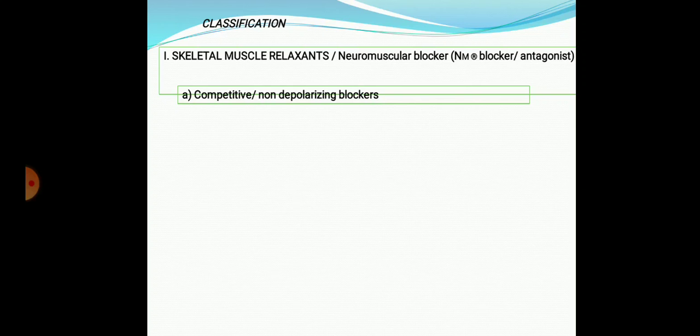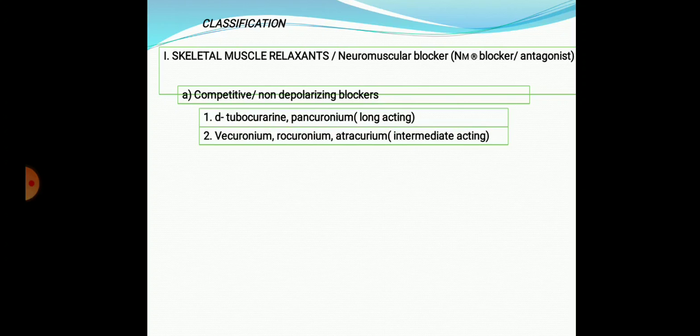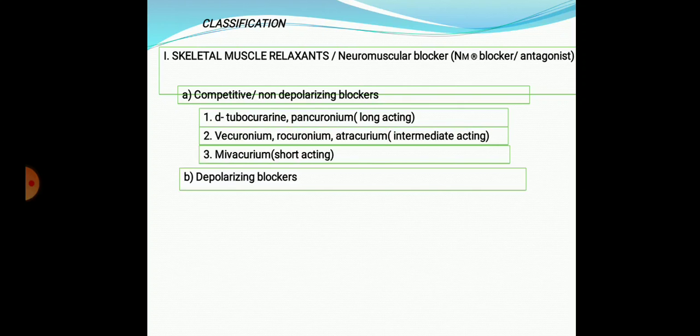Classification: first are skeletal muscle relaxants, also known as neuromuscular blockers or NM receptor antagonists. Subclassification: competitive or non-depolarizing blockers — they compete with acetylcholine for the NM receptor. Examples include d-tubocurarine and pancuronium (long-acting), vecuronium, rocuronium, and atracurium (intermediate-acting — note atracurium undergoes Hofmann elimination). Mivacurium is a short-acting drug useful for intubation and very short procedures. The second subclass is depolarizing blockers.